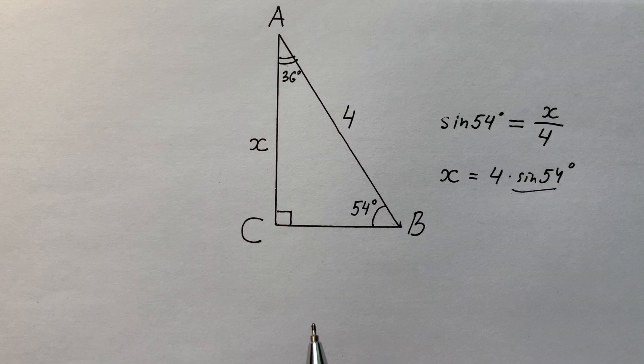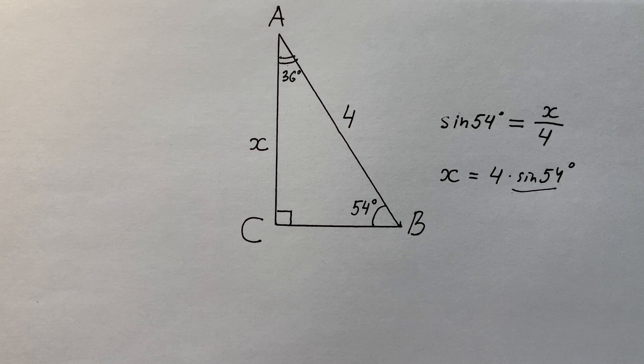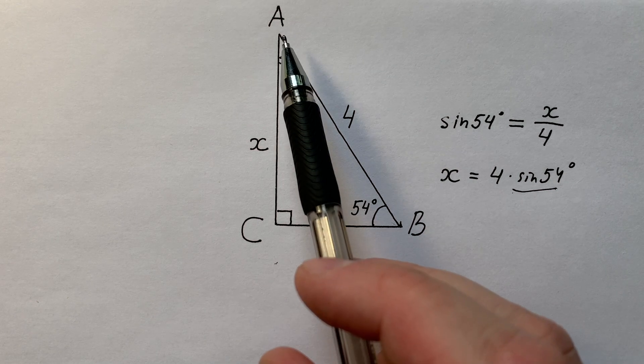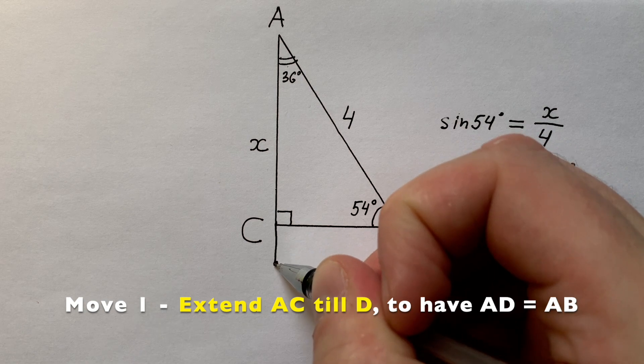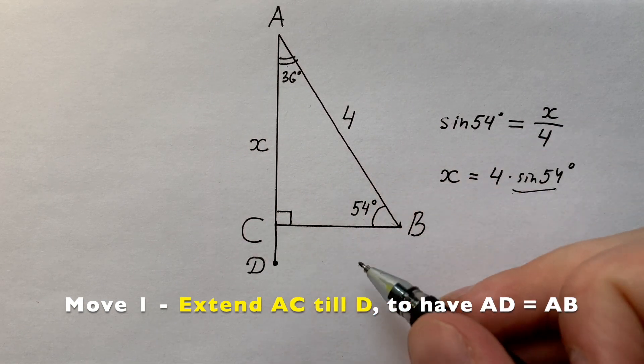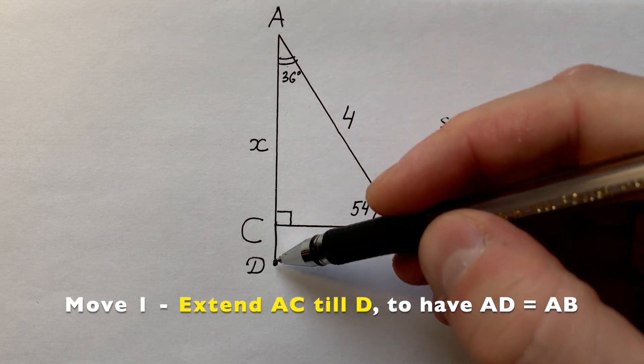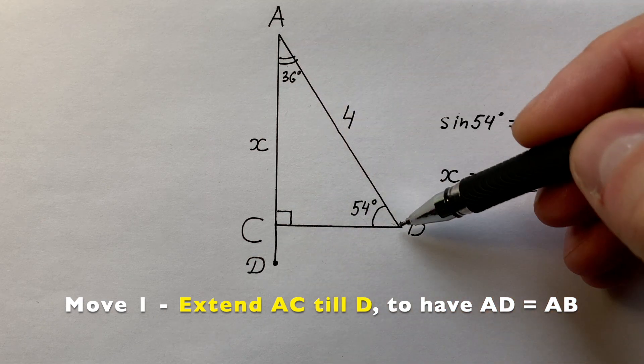But now let's make a really impressive geometrical way. Let's extend AC till the point D in the way that AD is equals to AB.